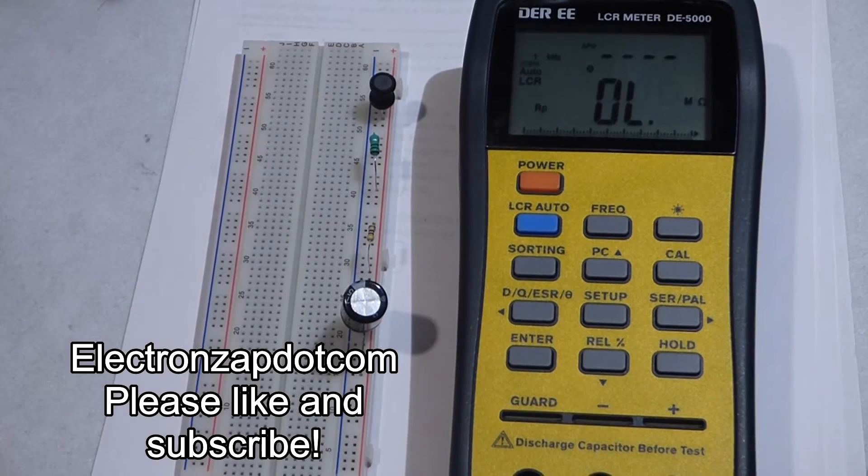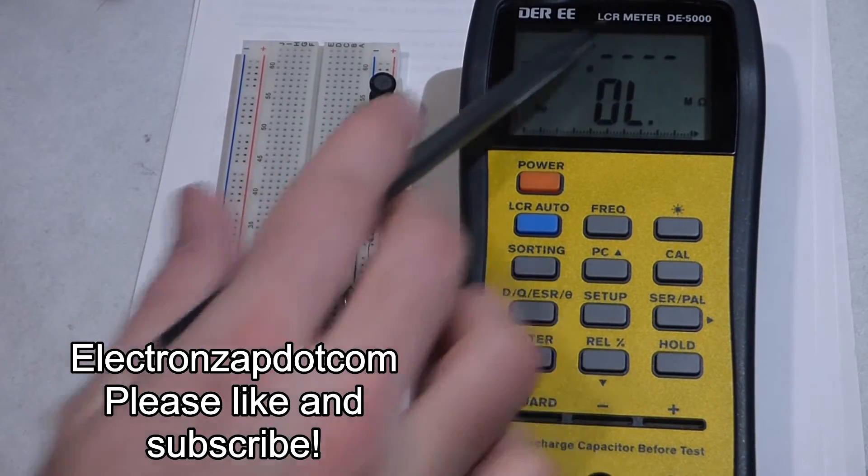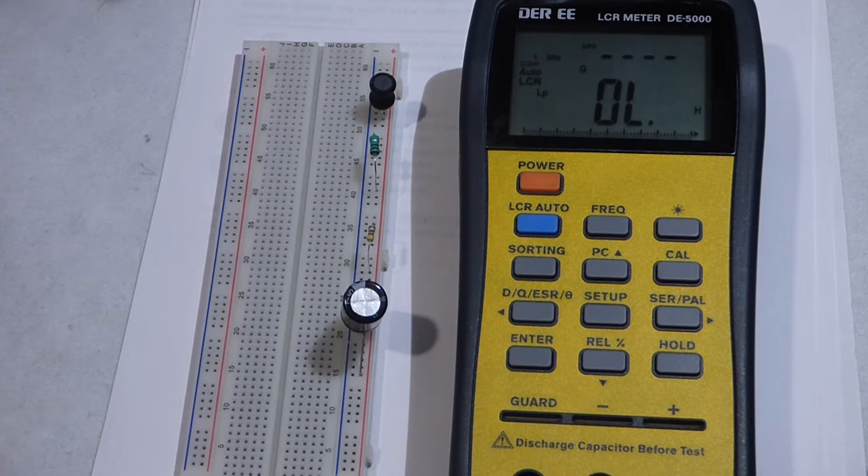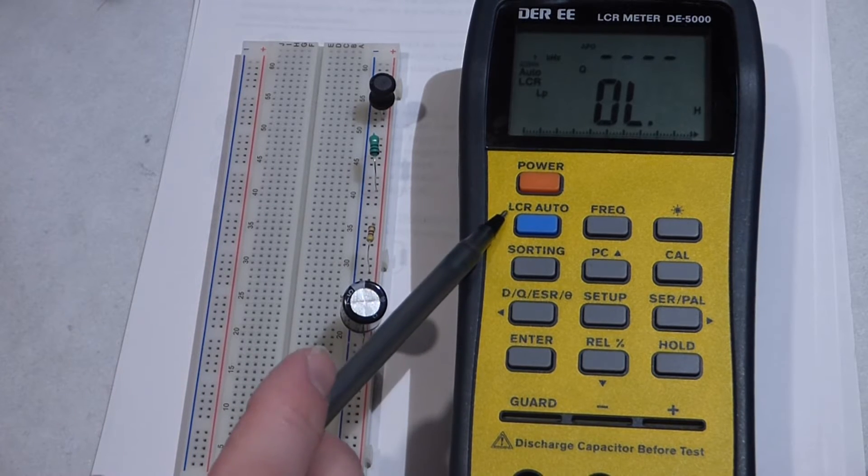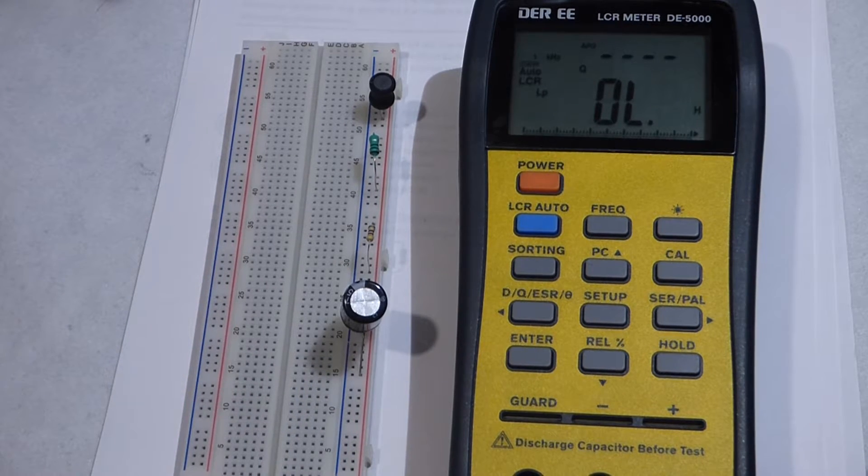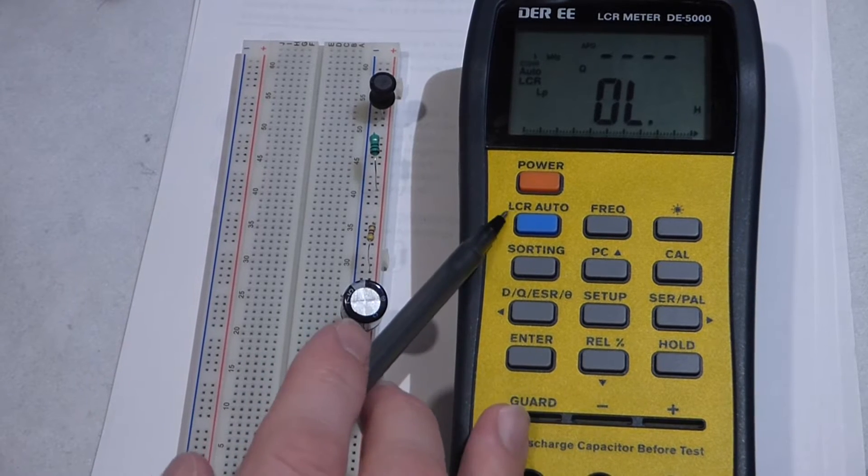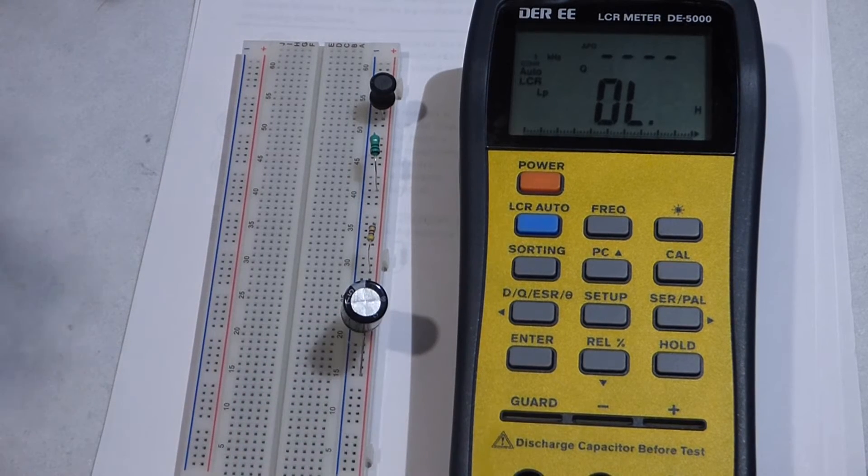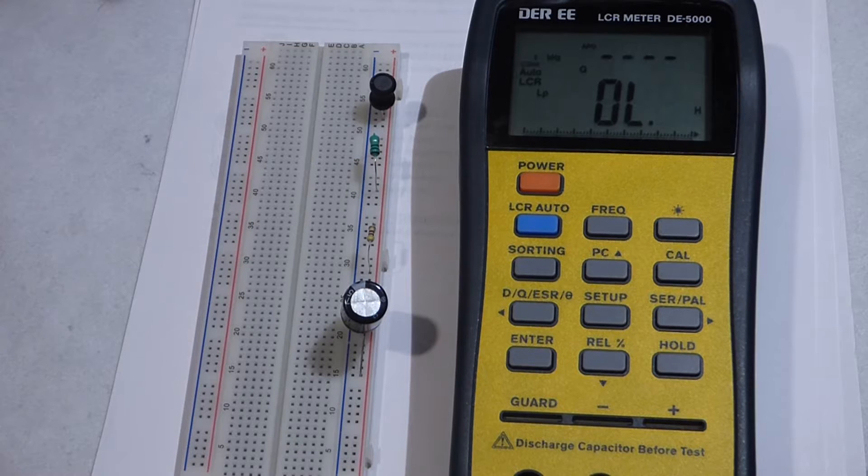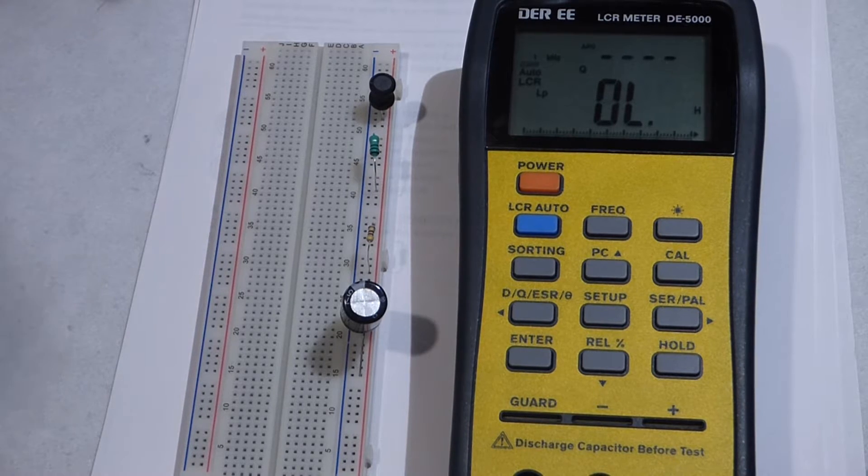The number one reason why I got an LCR meter was to measure inductance. The L in LCR stands for inductance - this is inductance, capacitance, resistance - so it measures all three of these, which is really nice.